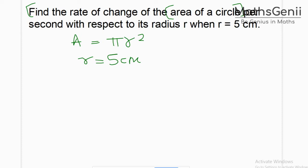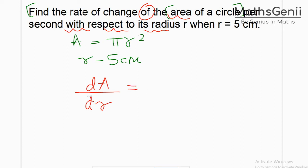What do I want to find the rate of change of? Pay careful attention to what comes in the numerator and denominator. Rate of change of area — so we have dA. With respect to what? Radius. So in the denominator we have dr. That gives us d/dr of pi r squared.